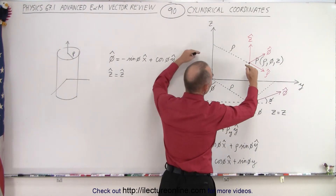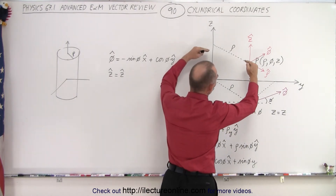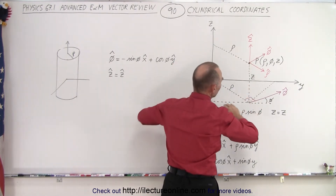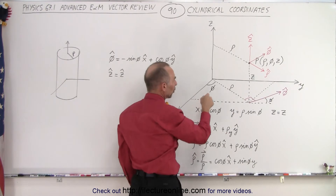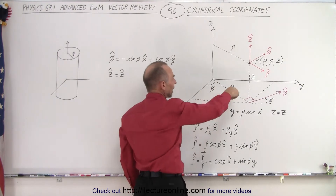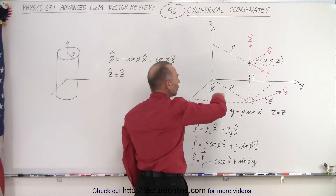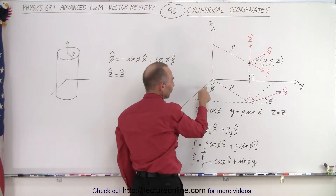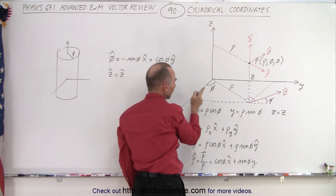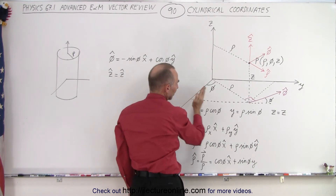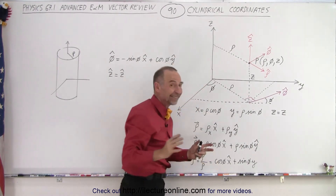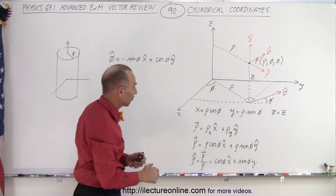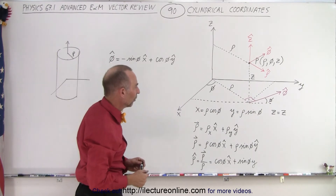You can see that that rho distance is parallel to the XY plane. We also have one more component which describes the angle relative to the X axis. The phi angle is relative to the X axis, and that's exactly the same as we see in spherical coordinates.